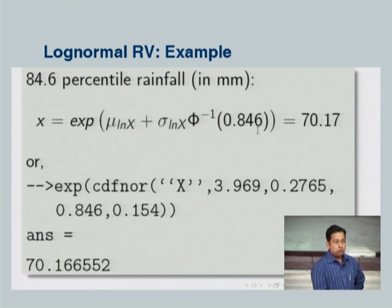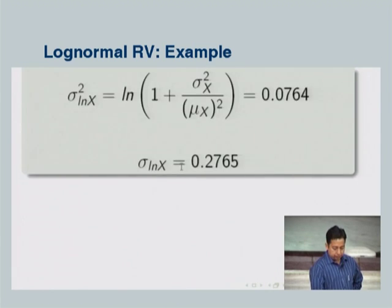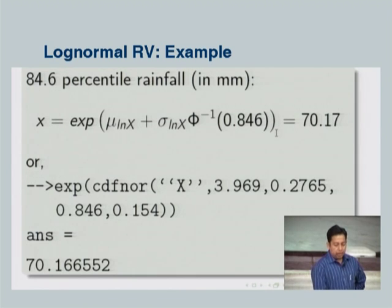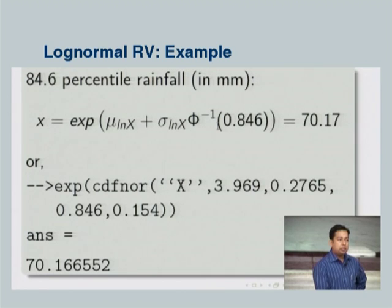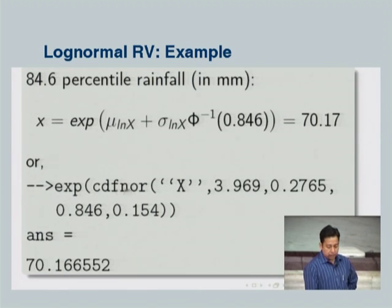To find the 84.6th percentile, we use the inverse: x equals exp(phi-inverse of 0.846 times sigma_{ln X} plus mu_{ln X}). You can use standard tables with linear interpolation to find the phi-inverse, or use Scilab. In Scilab, we write the exponential of the inverse cdfnor expression, finding the inverse for the computed mu and sigma of ln(X) at p = 0.846. This gives us the answer.